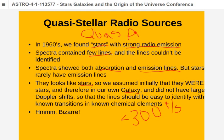These were called quasi-stellar objects, quickly shortened to quasars. The name was taken over by advertisers — you can find washing machines called quasars — though you'd hope they don't actually behave like quasars since they're quite violent.